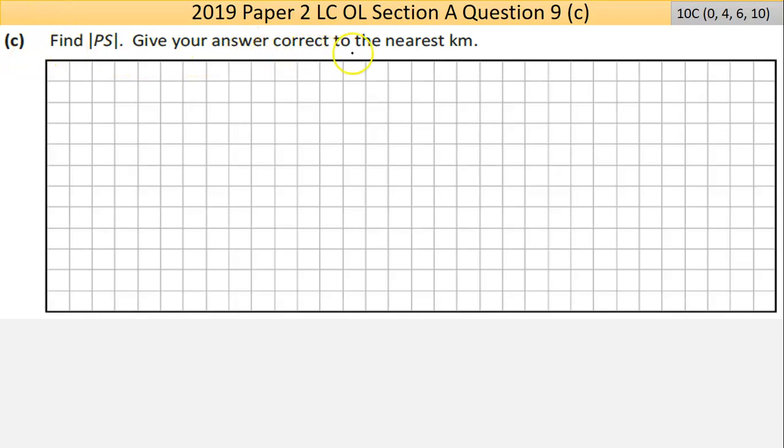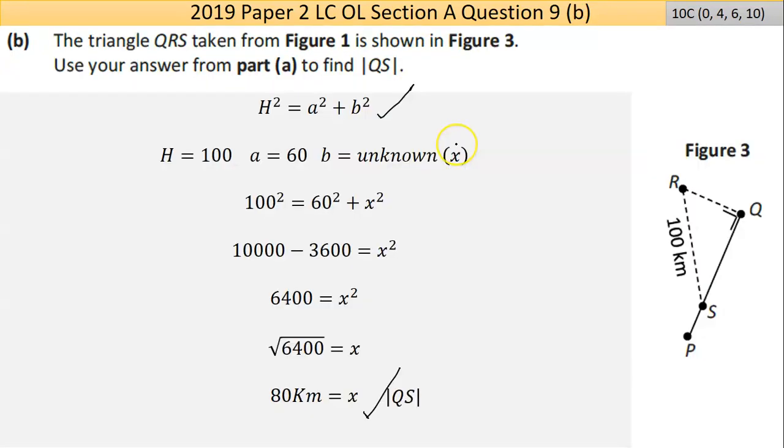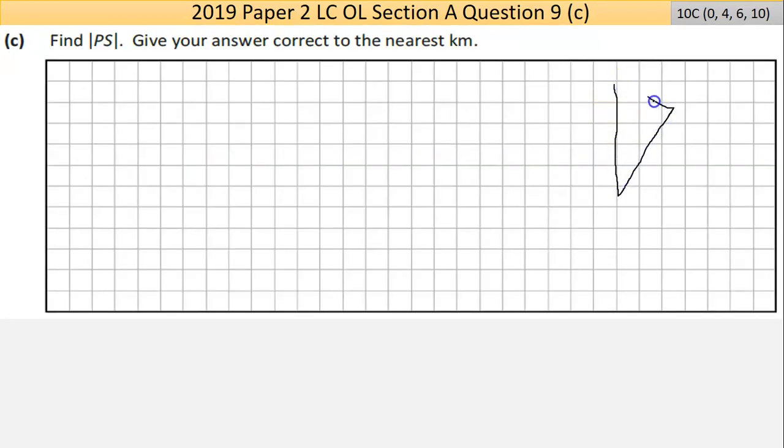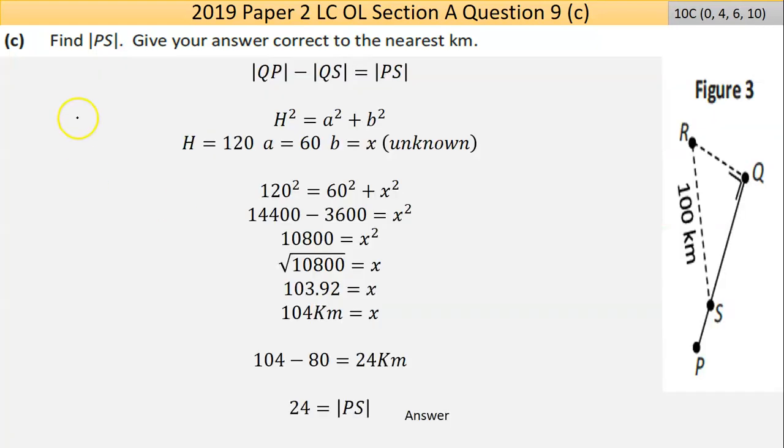Now part C says, find PS, give your answer correct to the nearest kilometer. You had your bigger triangle, 60 and 120. You have this smaller thing, it's actually 100. And then we worked out that this is 80. So I think we have to, if we use Pythagoras, work out the full length, the bigger triangle, then take 80 away from it. And then we're done. I've written out QP, so that big length there, take away the smaller length, equals this bit.